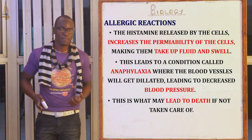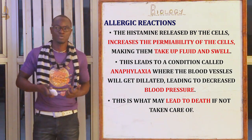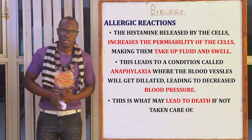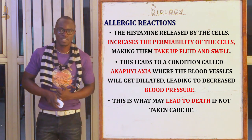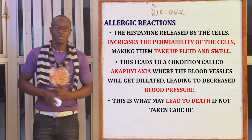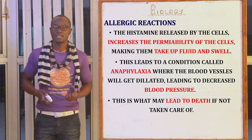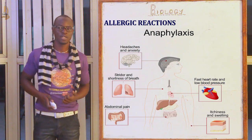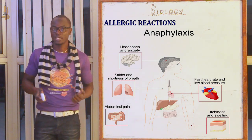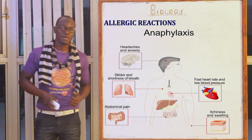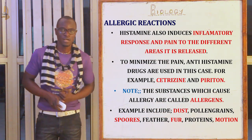Histamine increases the permeability of the cell, making them take up fluid and eventually leading to swelling. This may lead to a condition called anaphylaxis, whereby the blood vessels get dilated, leading to lowering of the blood pressure, which eventually may lead to death. Histamine also induces the inflammatory response and pain.